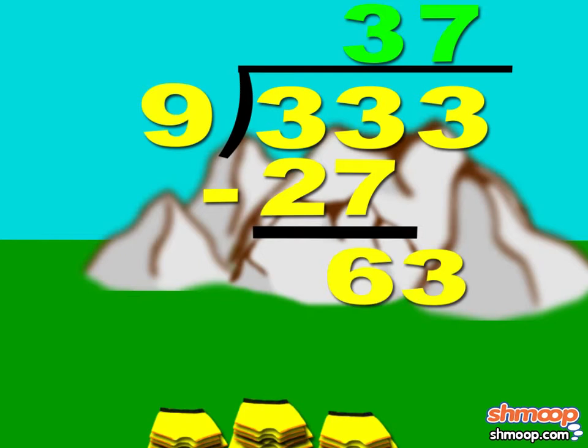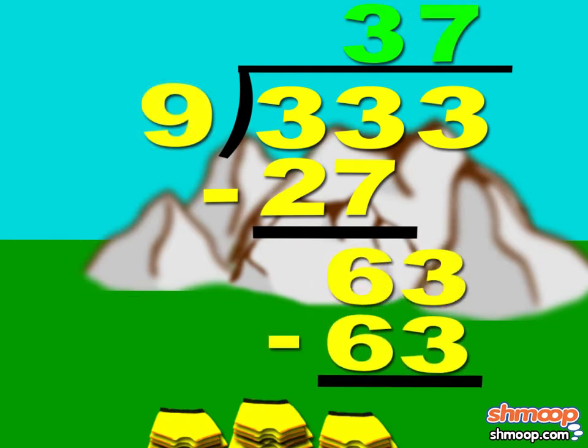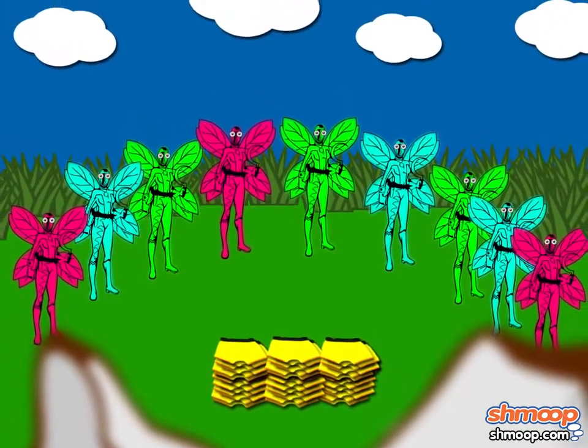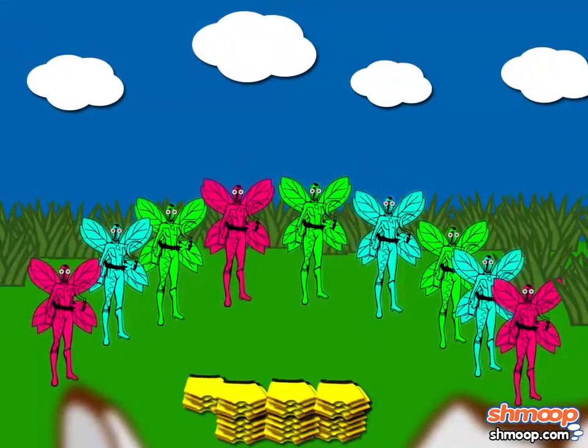Which we write above the ones place. Seven times nine is 63. 63 minus 63 in California is zero. So we have no remainder. Yay. Our answer is 37 pieces of underwear per fairy.